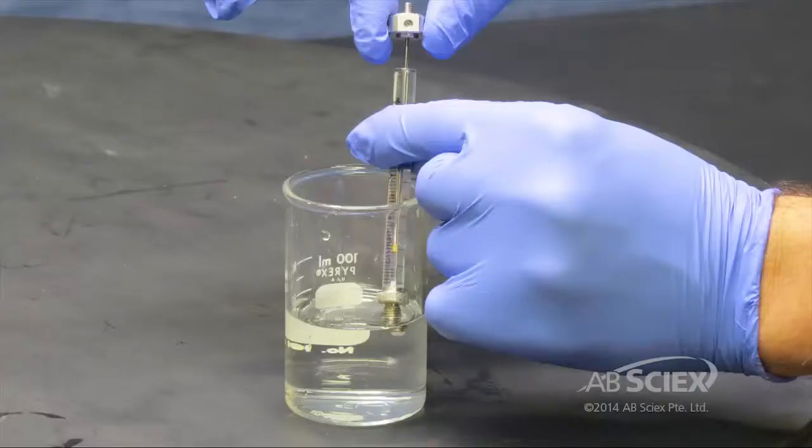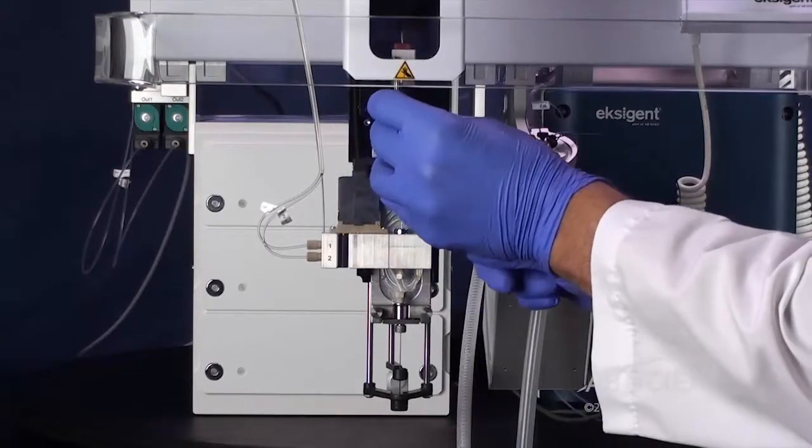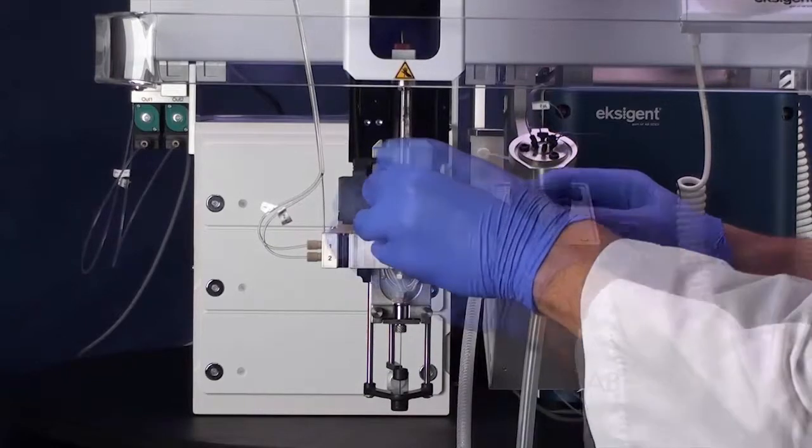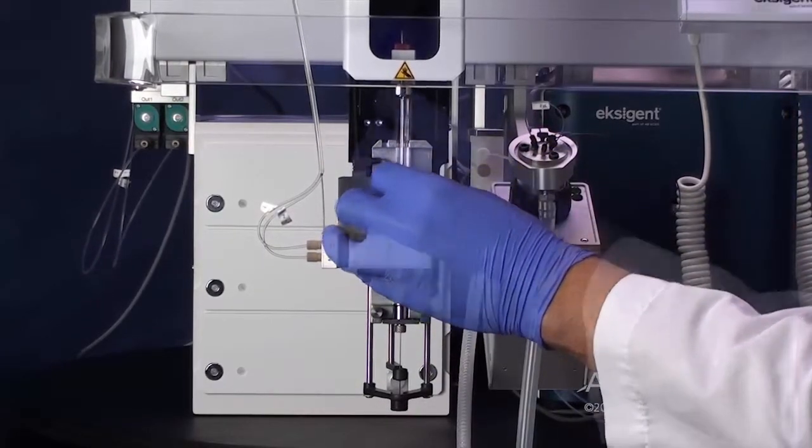Prime the new syringe manually before inserting into the PAL system. Screw the syringe barrel into the holder. Move the plunger holder up until it reaches the plunger bushing.